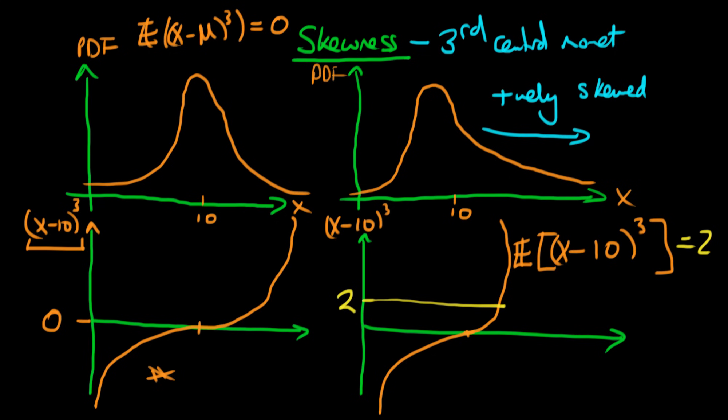But normally when we talk about skewness, we represent it by something slightly different. We take the third central moment and divide it by σ raised to the power 3/2—the variance raised to the power 3/2.